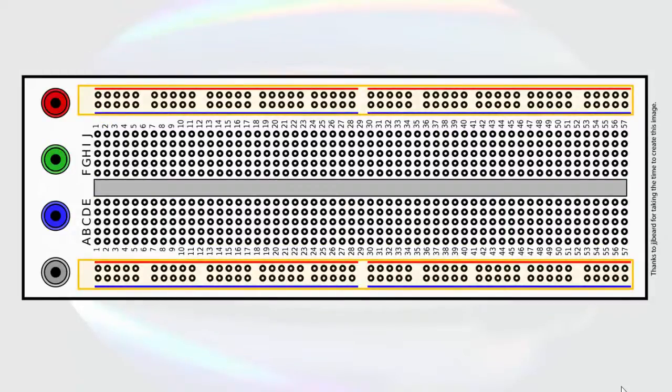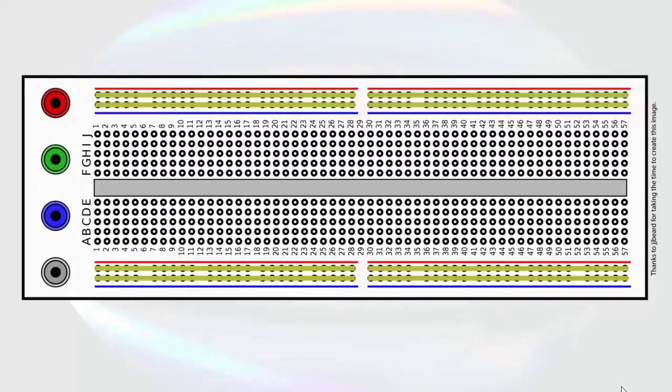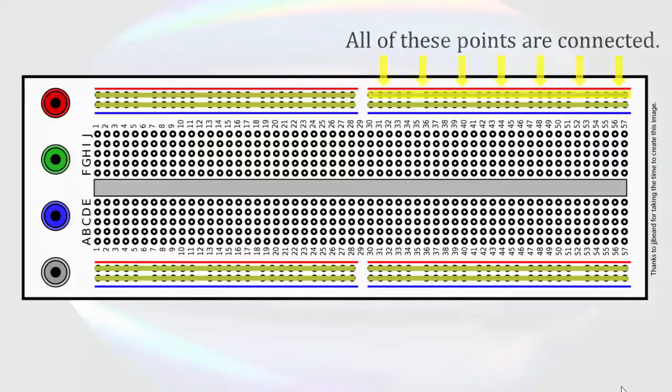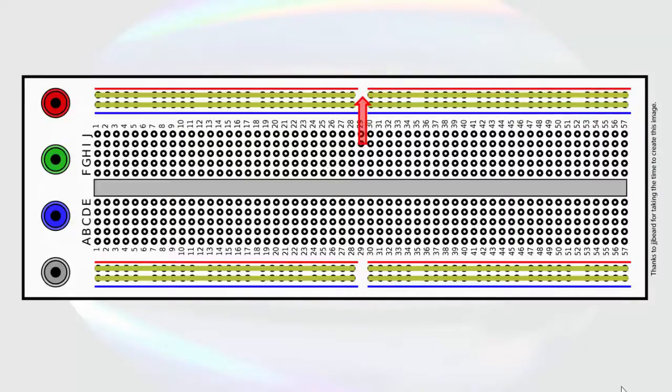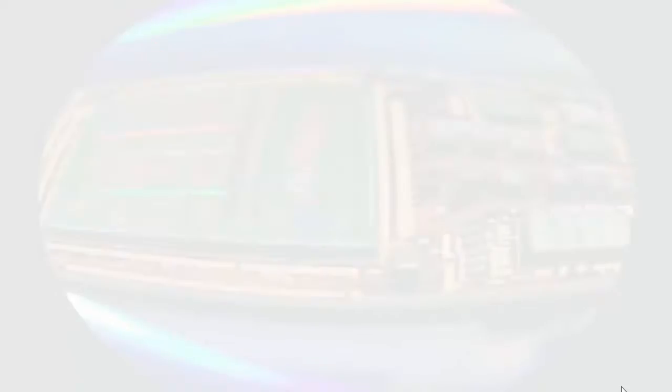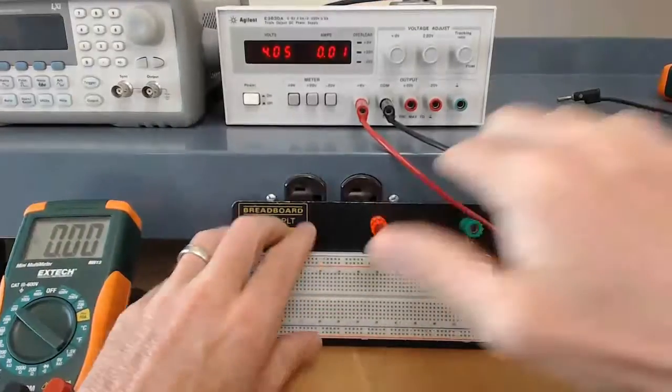The outside section of the breadboard has longer clips. We generally use these to distribute power to our circuit. Very often power and ground will be used at several points in a circuit, so it is neater and more convenient to have power and ground available at many points. All the points adjacent to each of the solid lines are connected. If there is a break in the line, that means the clip is not continuous for the whole length of the board. Whether the clips are continuous or not varies from breadboard to breadboard, so be sure to pay attention to the line.